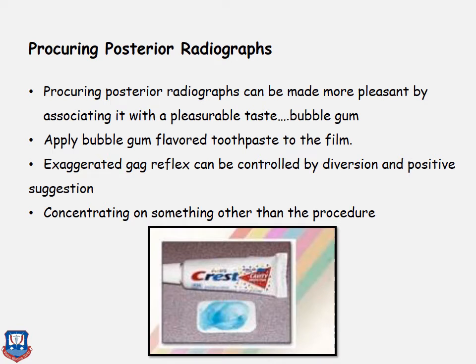Applying bubble gum flavoring or toothpaste on the film is another technique for obtaining posterior radiographs from children.